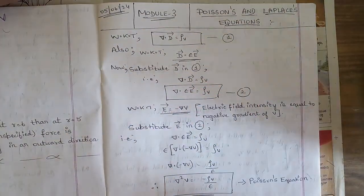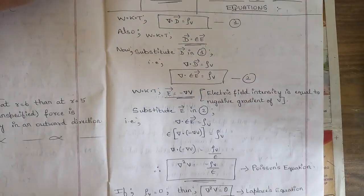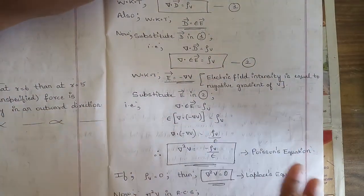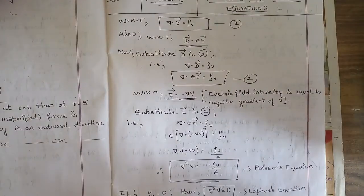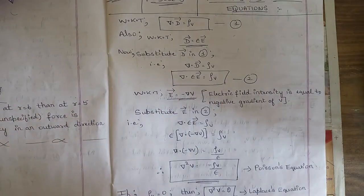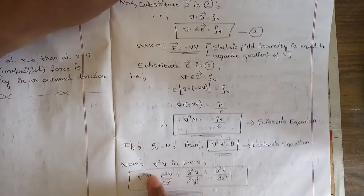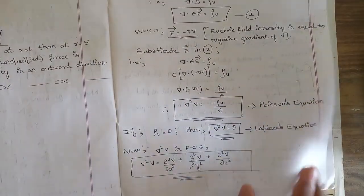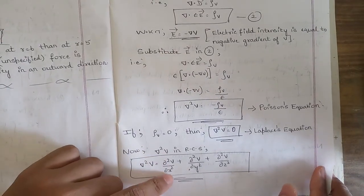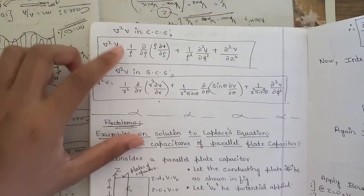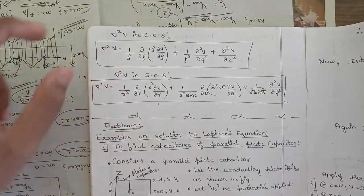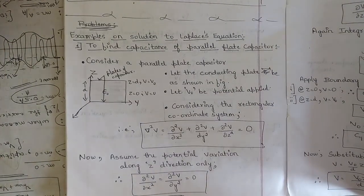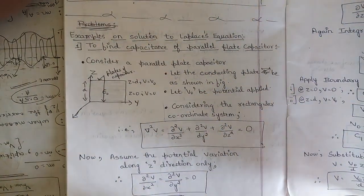Moving to Module 3 — the important question is the derivation of Poisson's and Laplace's equations using divergence, discussed in our concept videos. This is a very important, multiple-times-repeated question, possibly five to six marks. Poisson's equation: ∇²V = −ρ_V/ε. When ∇²V = 0, it becomes Laplace's equation. These equations are represented in rectangular, cylindrical, and spherical coordinate systems.